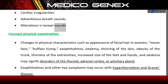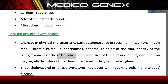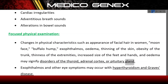Changes in physical characteristics found during focused physical examination may include appearance of facial hair in women, moon face, buffalo hump, exophthalmos, edema, thinning of the skin, obesity of the trunk, thinness of the extremities, and increased size of the feet and hands. These findings may signify disorders of the thyroid, adrenal cortex, or pituitary gland.